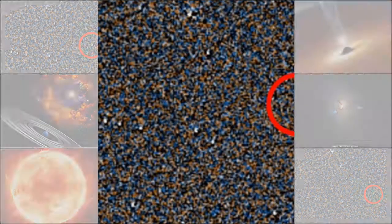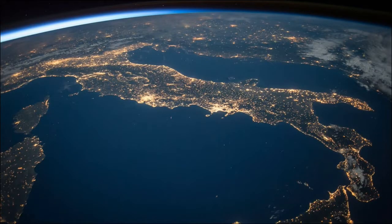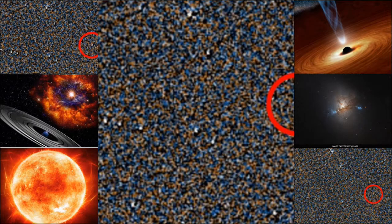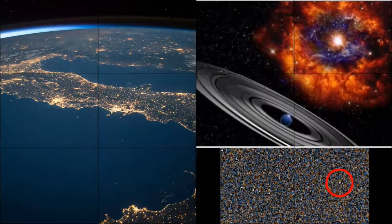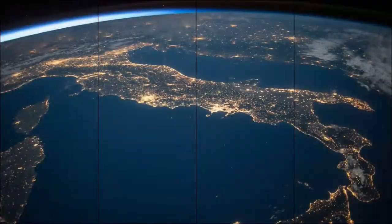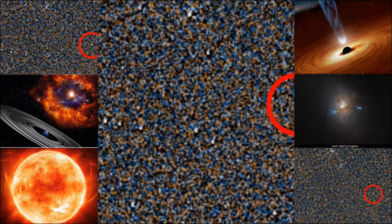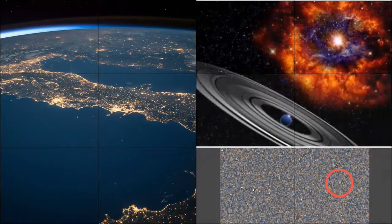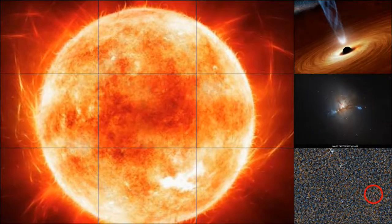Sky surveys had missed this object because it's too faint, Faherty added. Backyard Worlds: Planet 9 lets anyone with a computer and an internet connection flip through images taken by NASA's WISE spacecraft. If an object is close enough to the Earth, it would appear to jump when multiple images taken of the same spot in the sky a few years apart are compared.